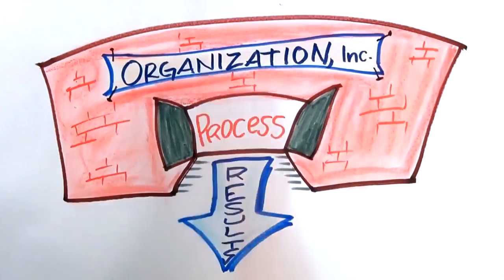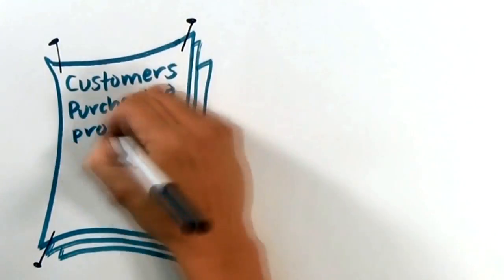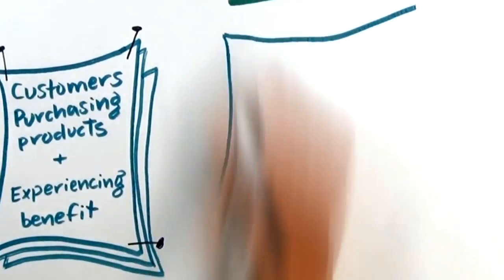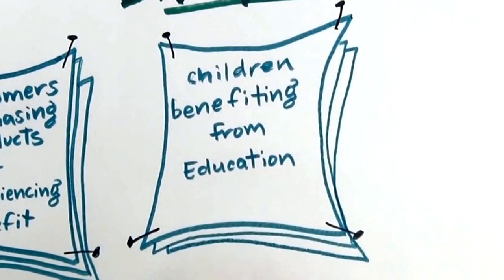So let's take a look at a few examples. In a retail setting, the results of the business are customers purchasing products and experiencing the benefit of those products. Whereas in a school, the result is children benefiting from their education, not just from the process of being educated, but the benefit of that education.